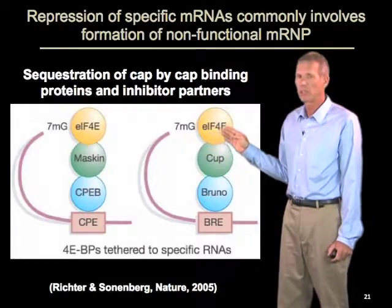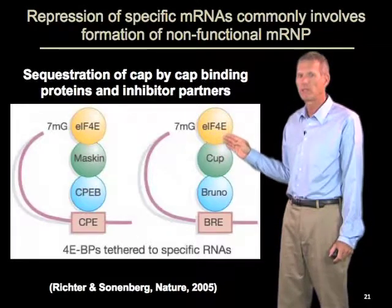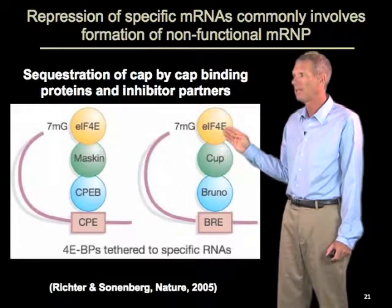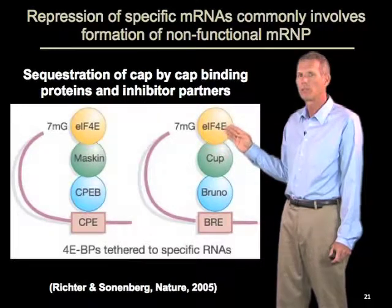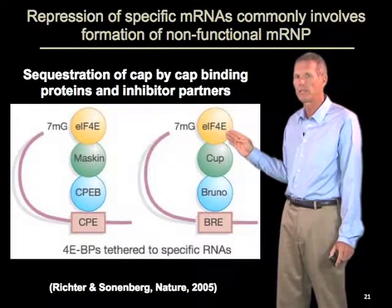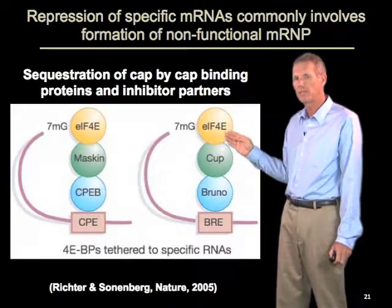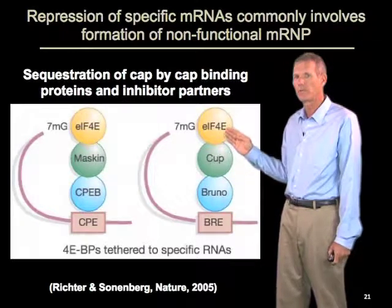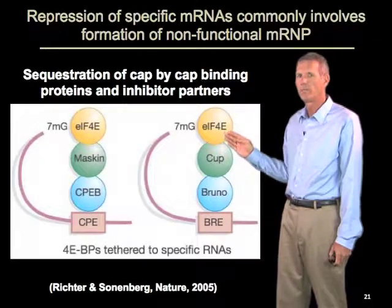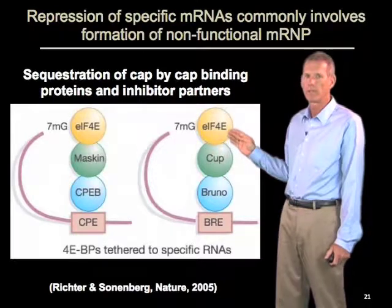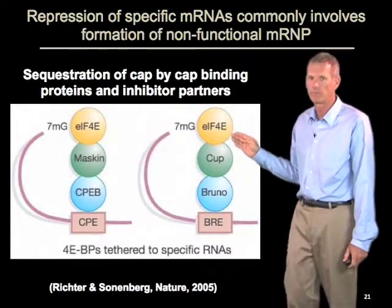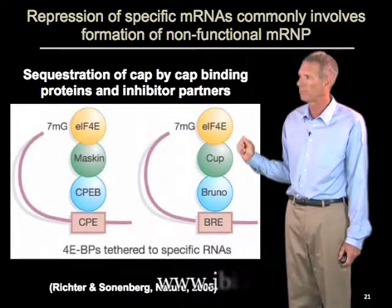One of the reasons this is probably such a prevalent type of complex for repression is that by binding the CAP with the CAP binding protein, we're actually going to block the major pathway of mRNA degradation. So this not only represses the mRNA for translation, but keeps it available by preventing its degradation — and I'll discuss that when we talk about degradation.